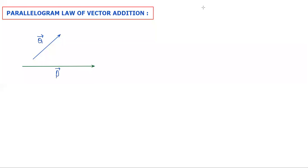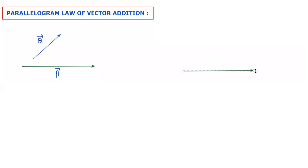We will draw these two vectors from one point, without changing their magnitude and direction. The direction remains the same; the two lines are parallel, and the length should be equal to the magnitude.